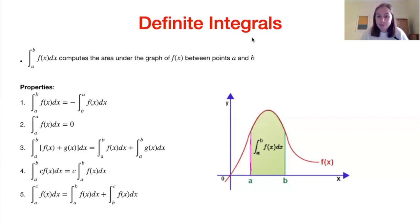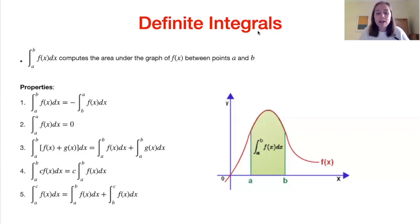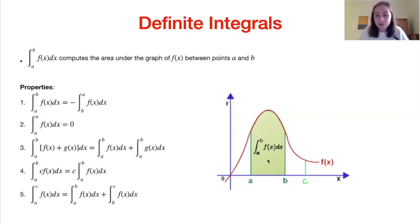The fourth property, again similar to before: if we have a constant, we can just take it out to the front. And finally, if we have the integral from a to c, we can split this up as an integral from a to b plus an integral from b to c. We can see this on the diagram: the area from a to c is exactly the same as the area from a to b plus the area from b to c.